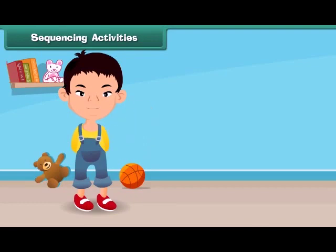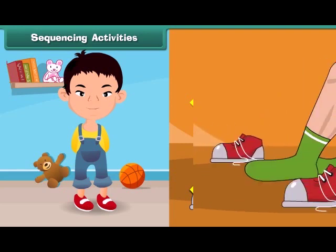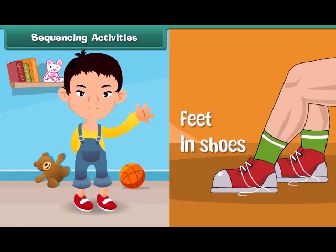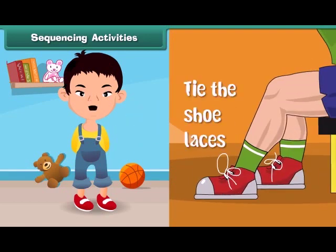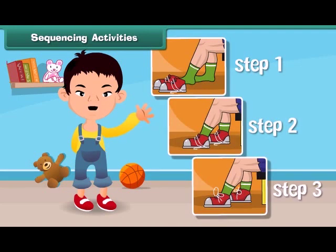When we do any work in our daily life, we have to do it in a sequential manner. For example, for wearing shoes, we can't tie our laces before putting our feet in. First, we have to wear socks so that we can wear our shoes properly. Then we put our feet in the shoes and tie the shoe laces. All these steps are performed in a sequential manner to wear them.